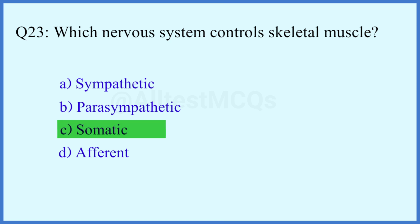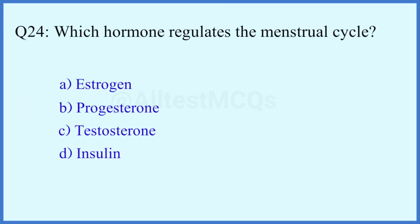Question number 24. Which hormones regulate the menstrual cycle? The right answer is option A: Estrogen.